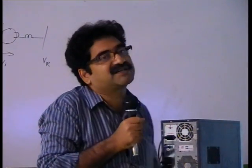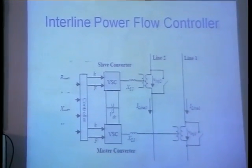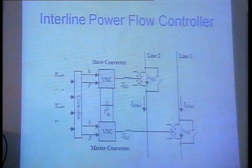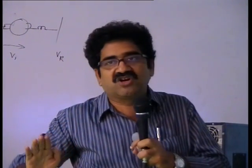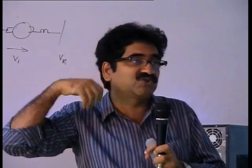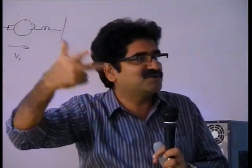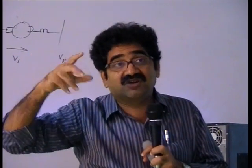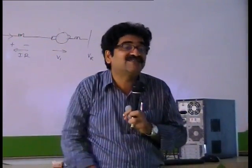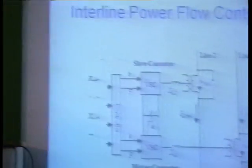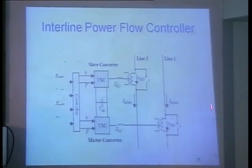In IPFC you have bidirectional power flow capability — it is an AC bidirectional controller, analogous to DC bidirectional controllers studied in battery-operated cars and electric traction. In electric traction, when going uphill the converter acts as a motor (power flows forward); going downhill it acts as a generator (power flows in reverse). Similarly, IPFC allows power to flow from line 1 to line 2 or from line 2 to line 1.